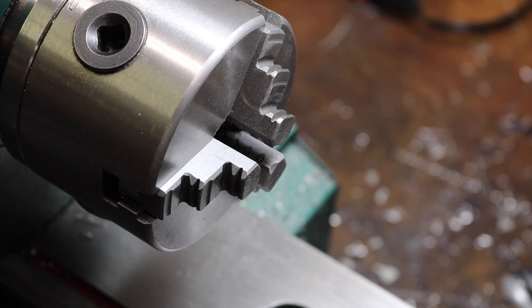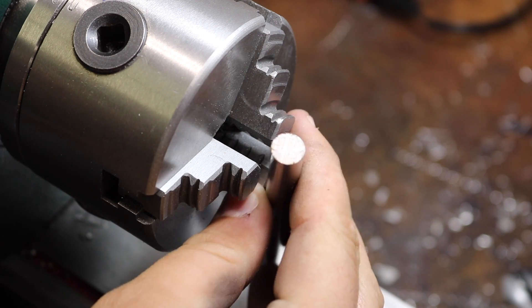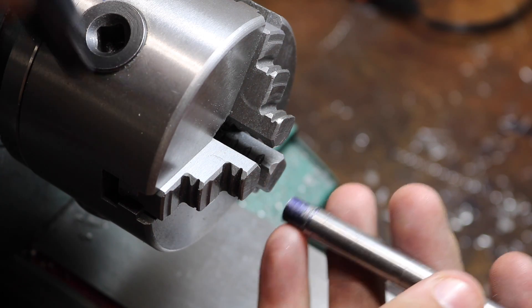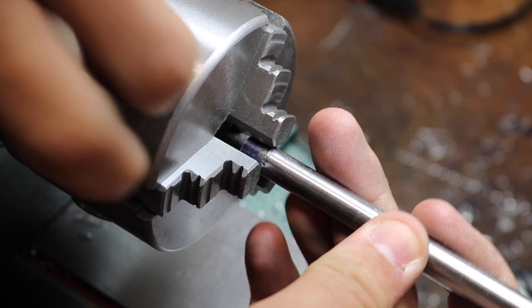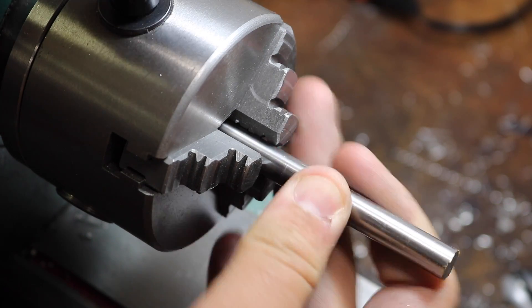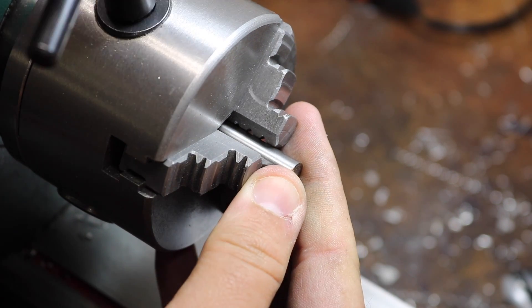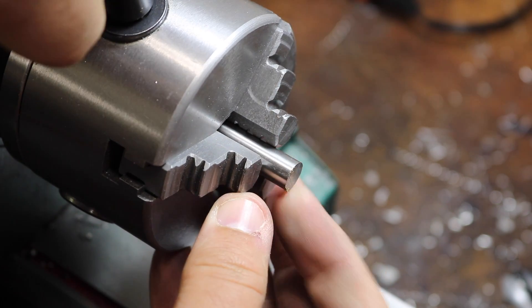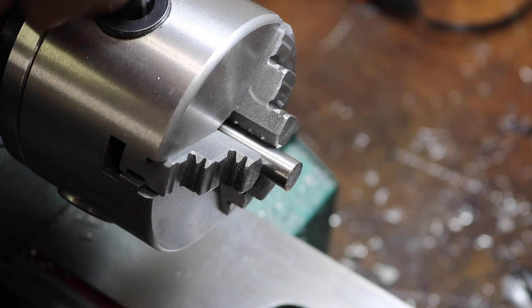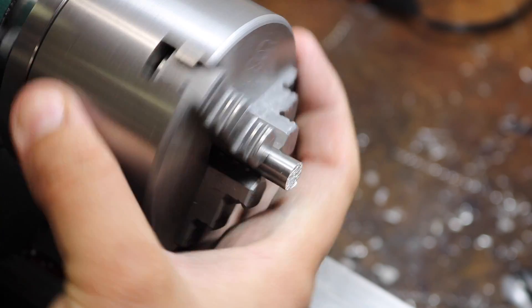Now the first operation is basically just going to face off the one side of this piece of drill rod. This is in preparation to drill the hole that will end up being our set screw that holds the tool in place. This can be done on both ends just for cleanliness's sake, but it's really only necessary on this end just to make sure that we're drilling a nice, clean, and straight hole.